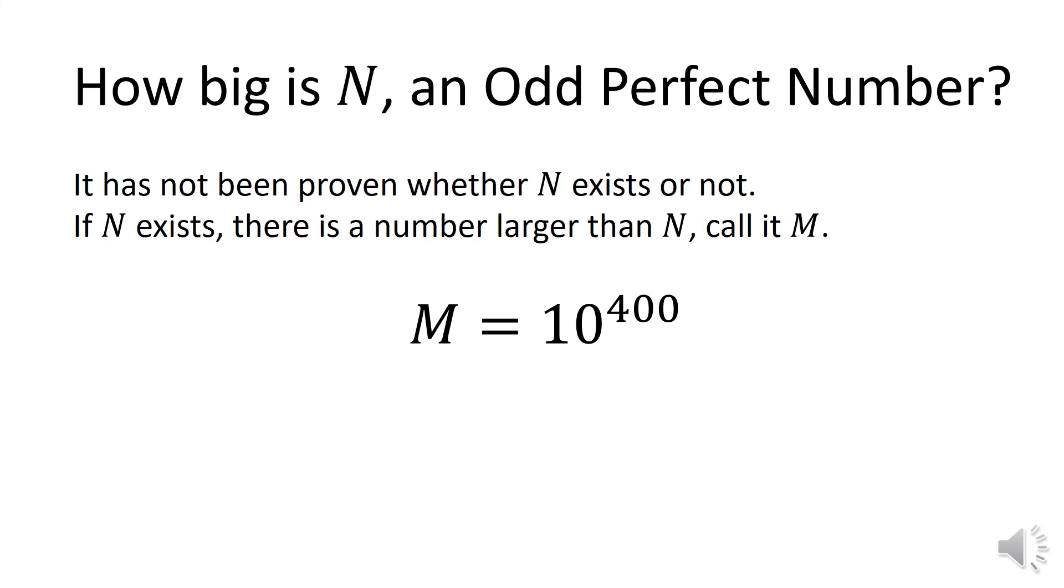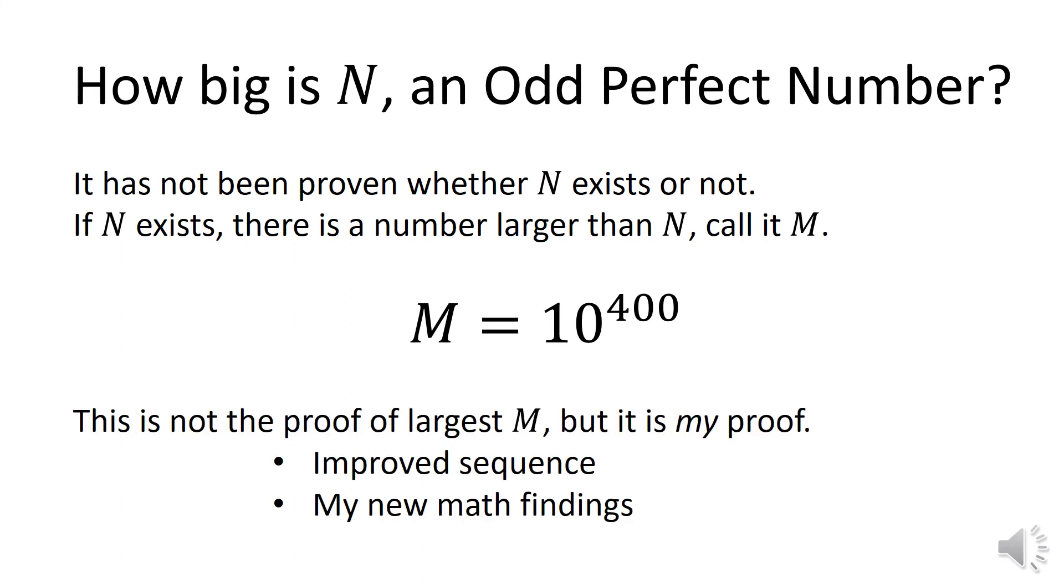It has not been proven that N exists or not. If N exists, there is a number larger than N, call it M. I started my proof of M equals 10 to the 400 before Ochem and Rao's work and finished my proof long after they finished theirs. My proof verifies my improved arrangement of proof as well as several examples of my new findings.